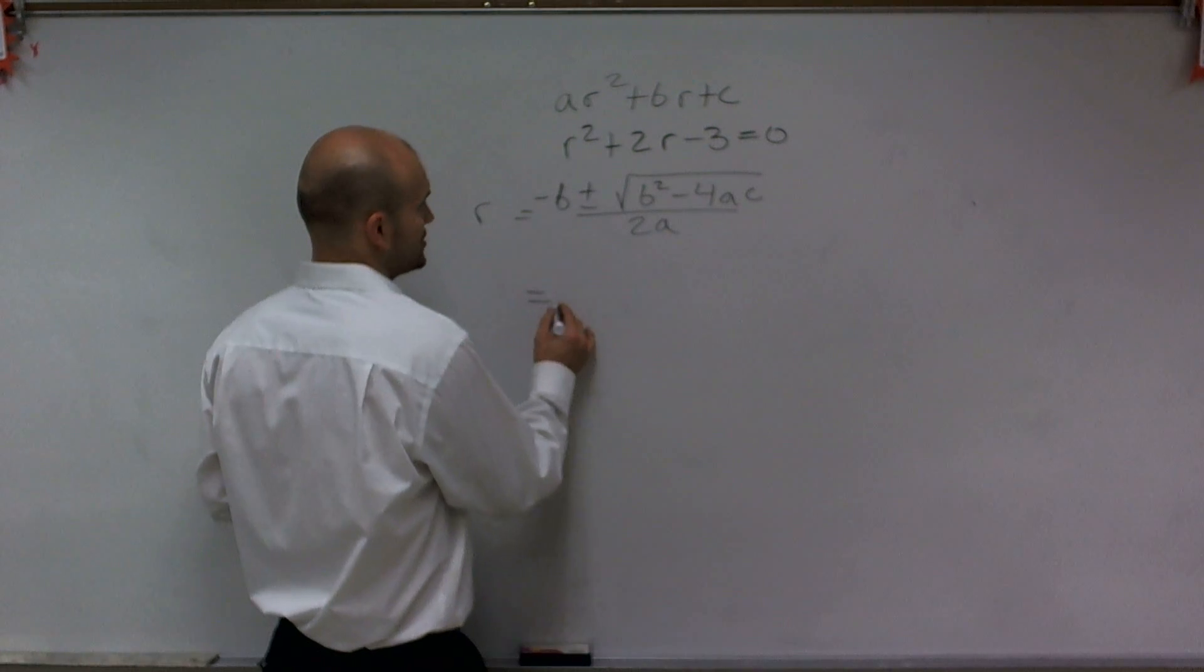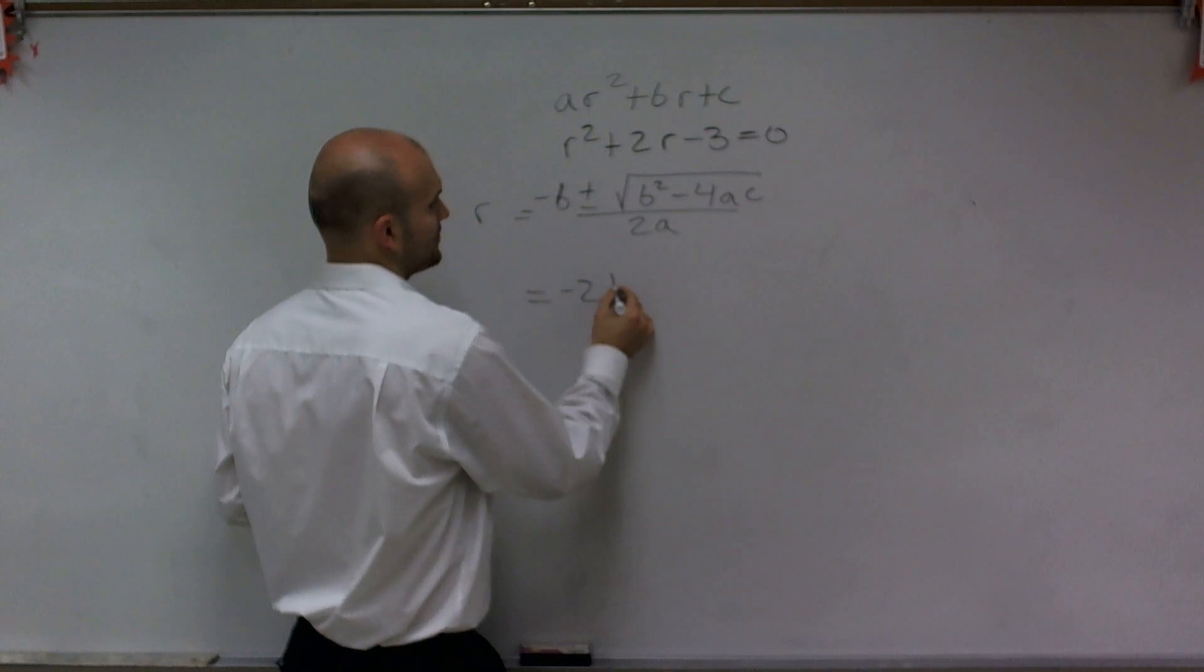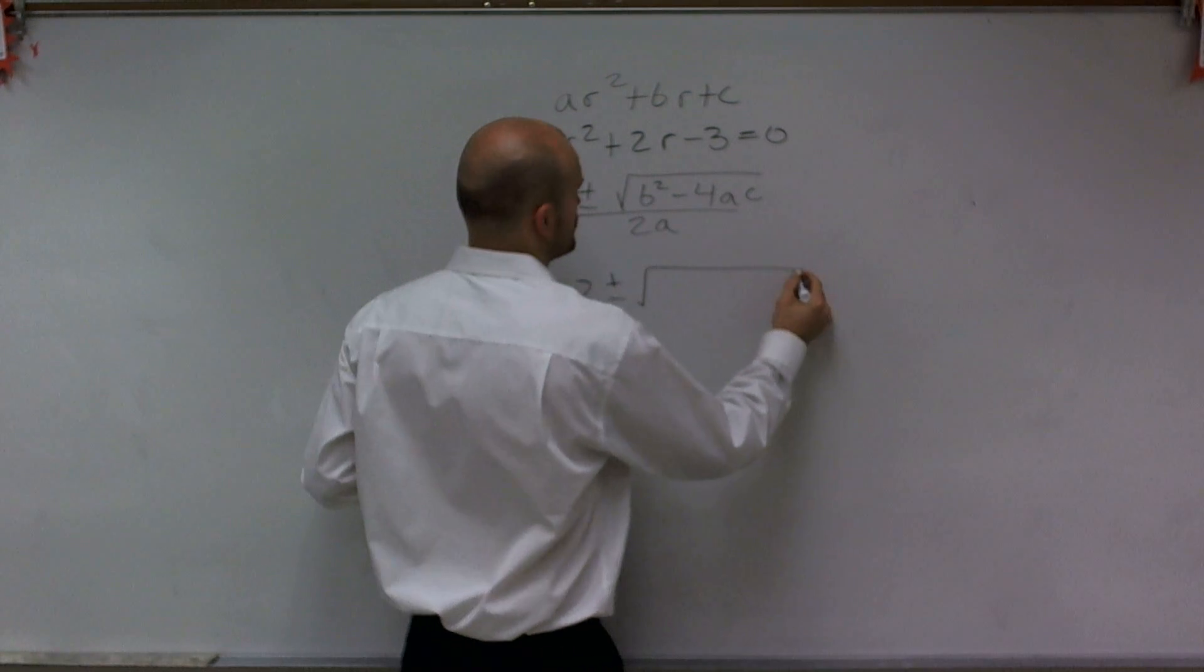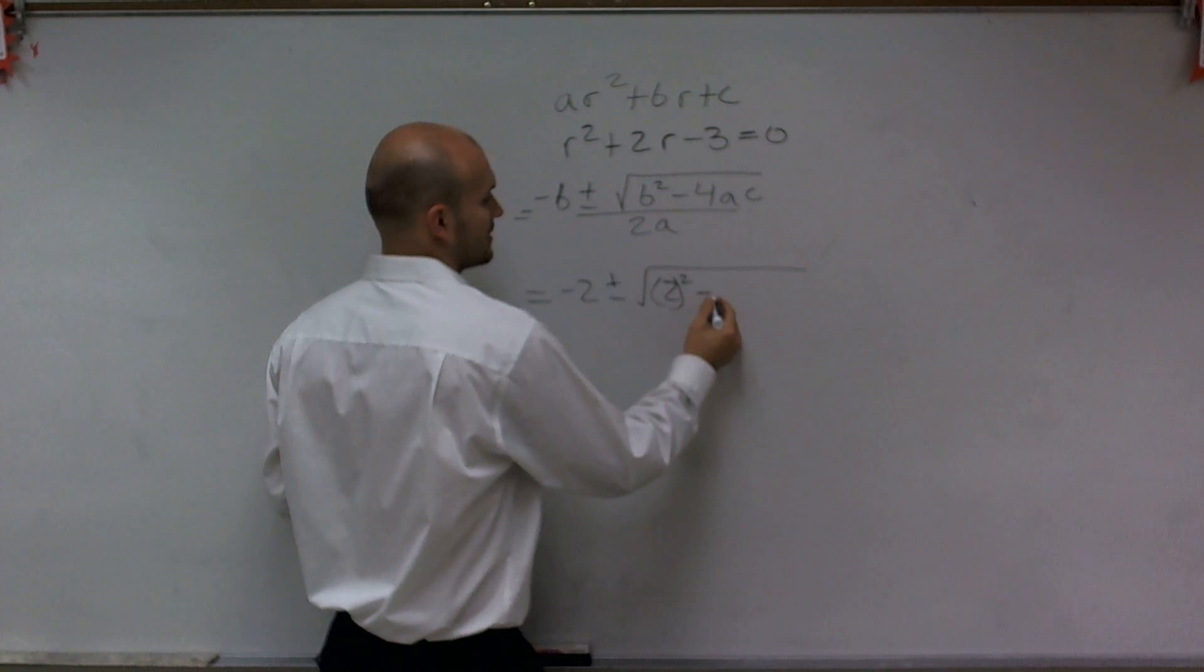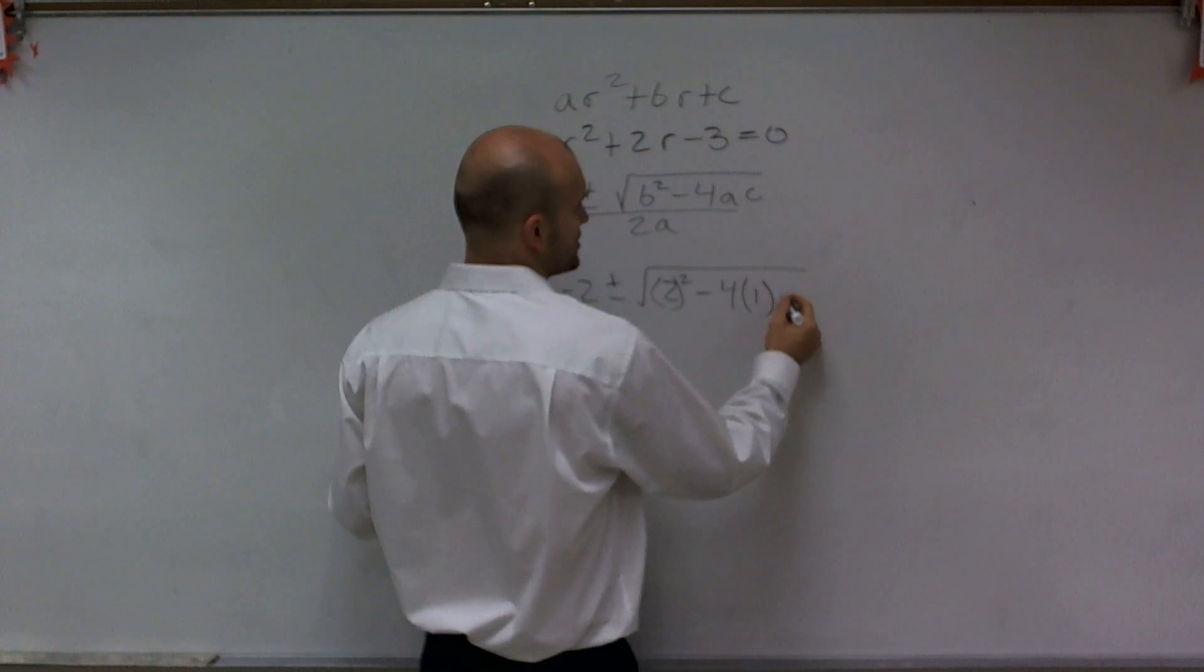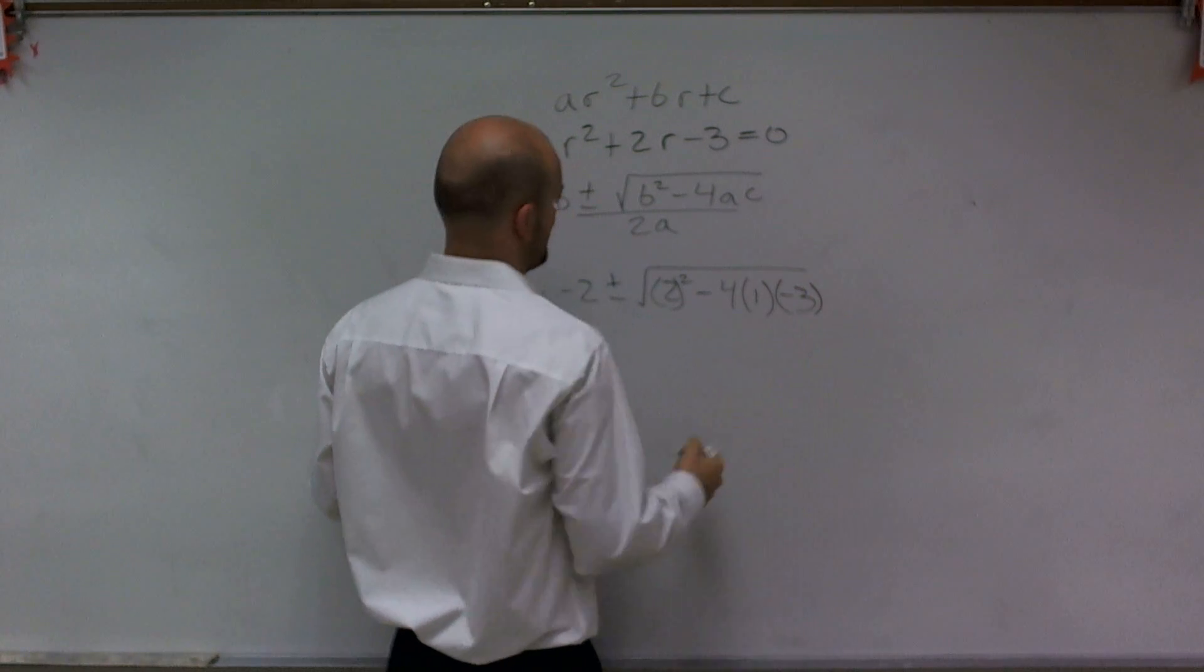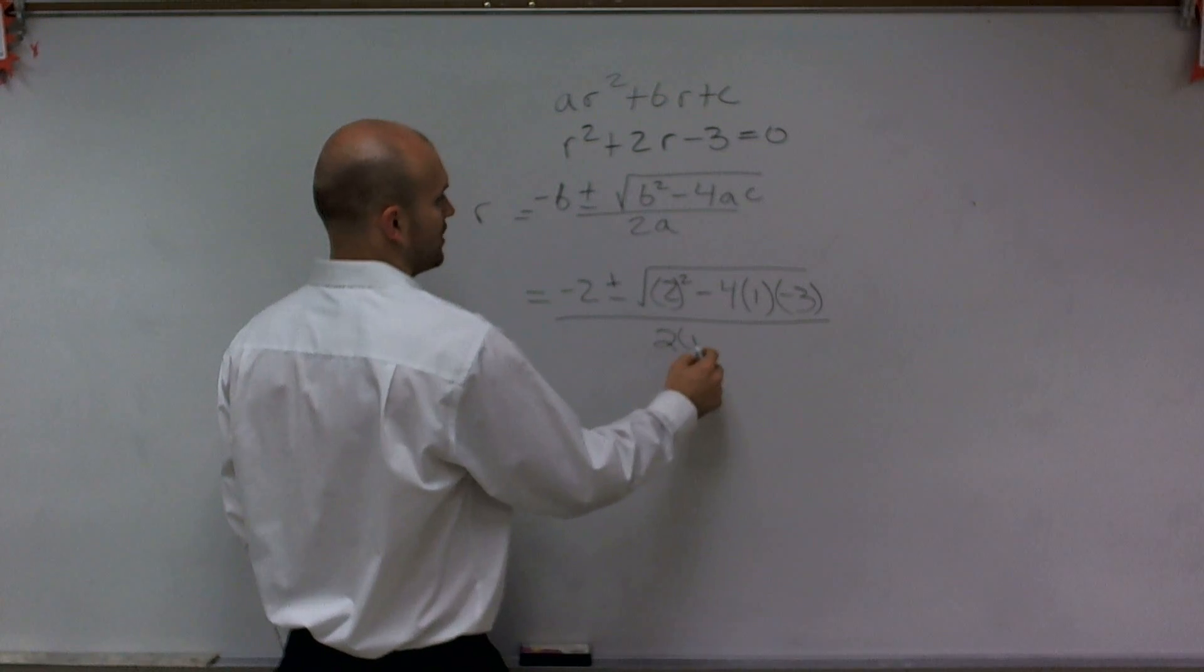So I'm going to plug those into my equation. So I have opposite of 2, which is going to be negative 2, plus or minus the square root of 2 squared minus 4 times 1 times c, which is negative 3, divided by 2 times 1.